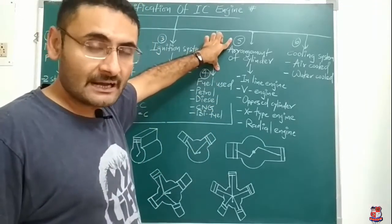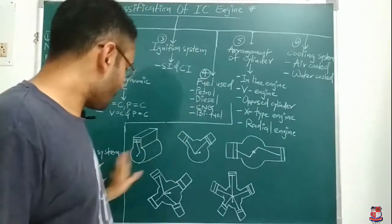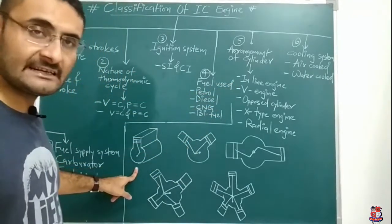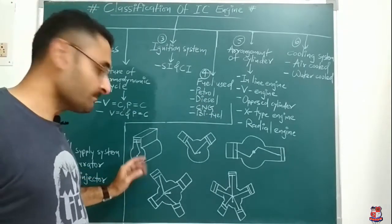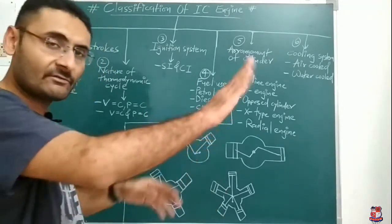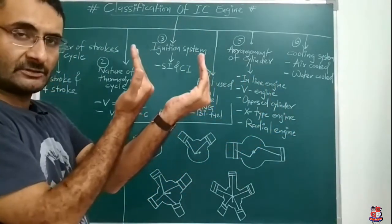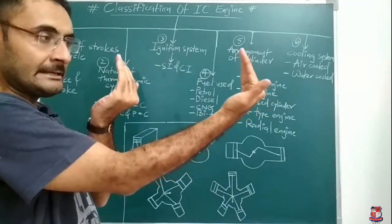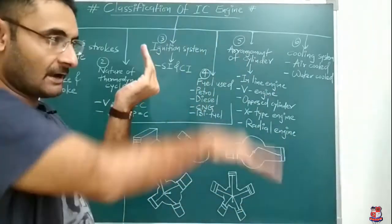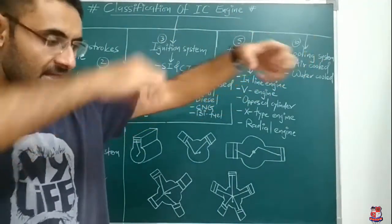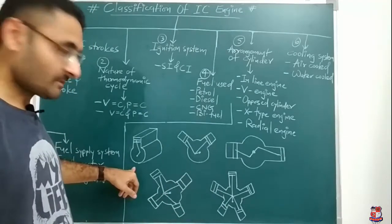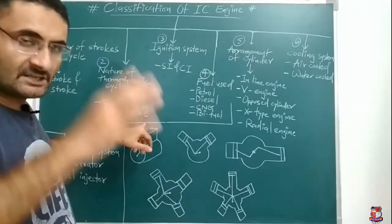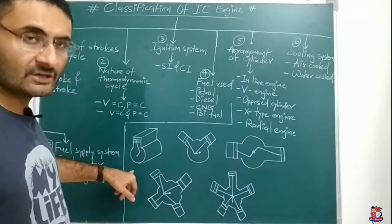Now, the fifth classification — and this is a very important classification — is based on the arrangement of the cylinder. Over here you can see five arrangements of cylinders. The first arrangement is known as inline engine. In an inline engine, all the cylinders are located in one line — a straight line. Supposing three engines are considered, all three are located in a straight line. That is why it is known as an inline engine. In an inline engine, only a single crankshaft is used, and all the power produced by all the pistons is transmitted to that single crankshaft.